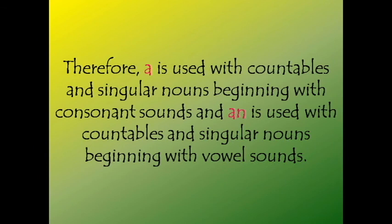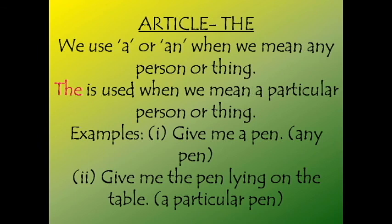Let us sum up what we have studied about a and an — the indefinite articles. An is used when we have countable and singular nouns which begin with vowel sounds, whereas a is used when we have countable and singular nouns that begin with consonant sounds. Always remember: an is used for vowel sounds and a is used for consonant sounds. Let us now move on to the definite article, the.